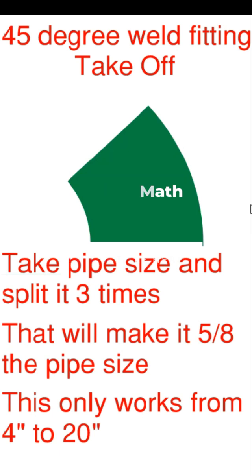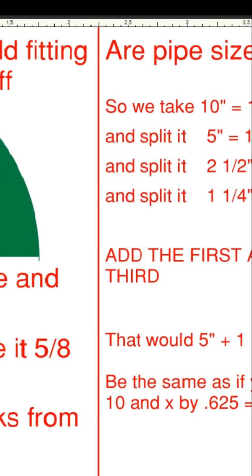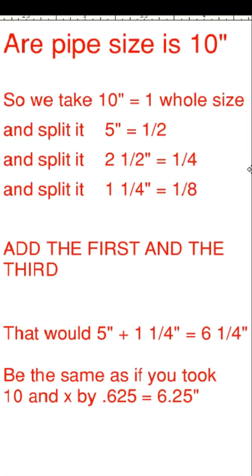Okay, so our pipe size is 10 inch. So we take 10, that's one whole size, and we split it. We get 5 inch, that's a half.